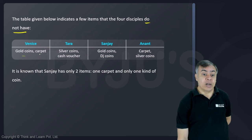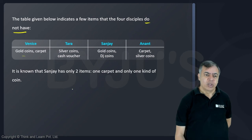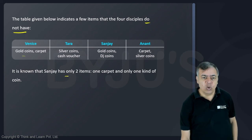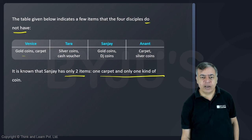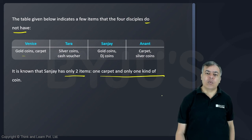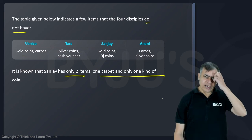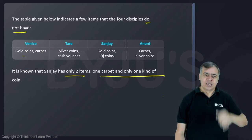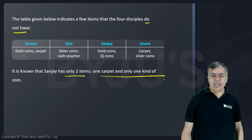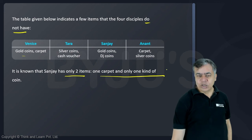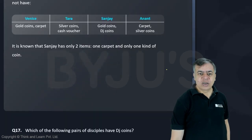V does not have gold coins or carpet. T does not have certain items. It is known that Sanjay has only two items: one carpet and only one kind of coin. Let us try to solve this.